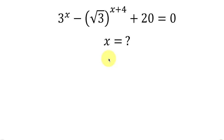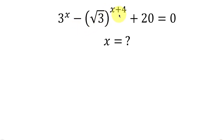What's going on everybody? Welcome back to my YouTube channel. Let's solve this math question that says: find the sum of the real solutions of 3 to the x minus the square root of 3, all raised to the x plus 4, plus 20, equal to 0.